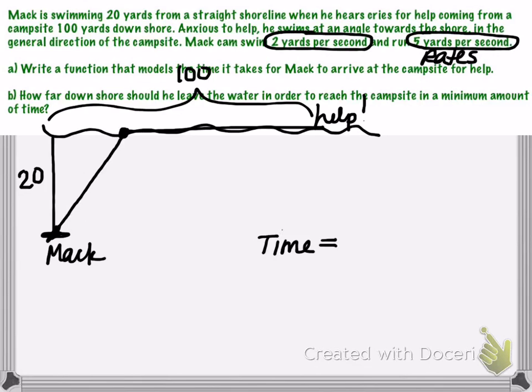Lots of unknowns. But we do know we're assuming that he is going to swim at a constant rate and run at a constant rate. So we know that the relationship between distance, rate, and time is the equation distance equals rate times time.